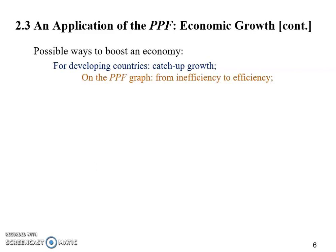On the PPF graph, this means they are moving from a place far below their own frontier — that's what we call inefficiency — to a place that is relatively more efficient. Specifically, the economic policies they should use is to remove all the barriers on the market.